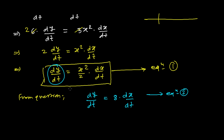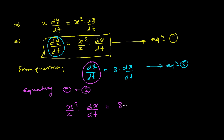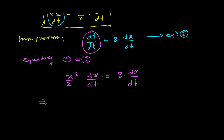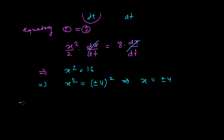We can see that both equations have dy/dt, so we can equate Equation 1 and Equation 2. Equating gives X squared over 2 times dx/dt equals 8 times dx/dt. Cancelling dx/dt from both sides, we get X squared equals 16, which gives X equals plus or minus 4, since 16 is the square of both positive and negative 4.